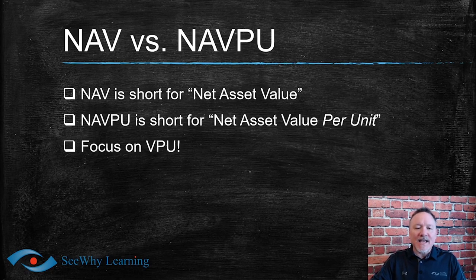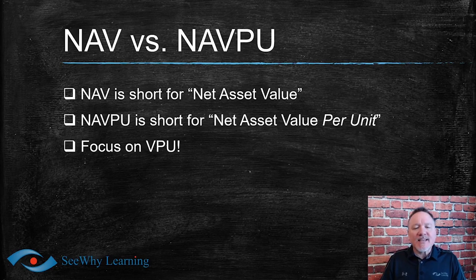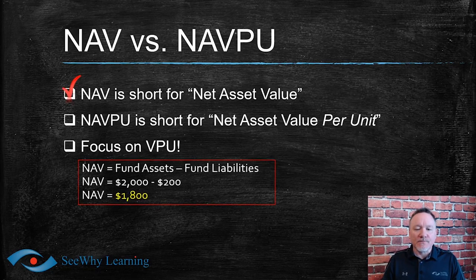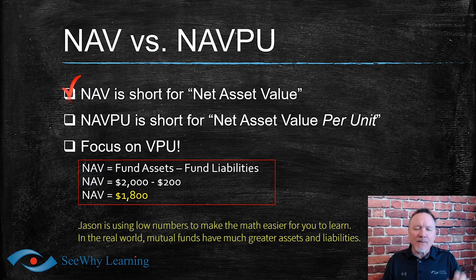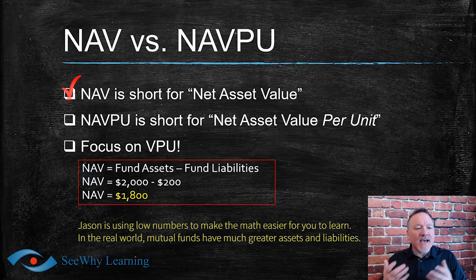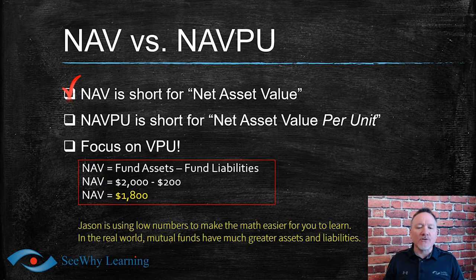NAV is simply the value of the fund's assets minus the value of the fund's liabilities. For example, if a fund's assets are worth $2,000 and liabilities are $200, the NAV is calculated as $2,000 minus $200, giving us an actual NAV of $1,800.